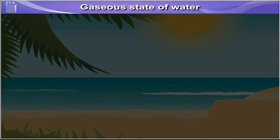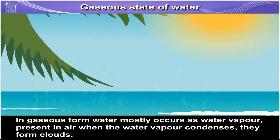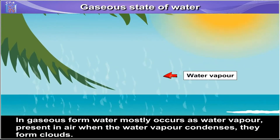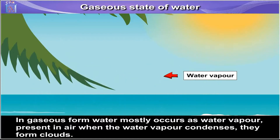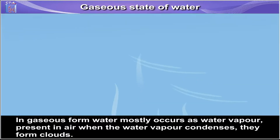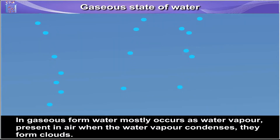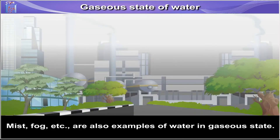Gaseous state of water. In gaseous form, water mostly occurs as water vapour present in air. When the water vapour condenses, they form clouds. Mist, fog, etc. are also examples of water in gaseous state.